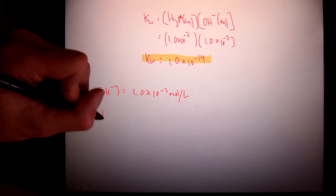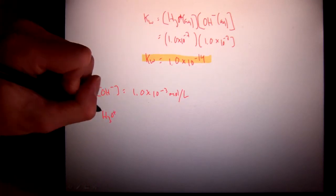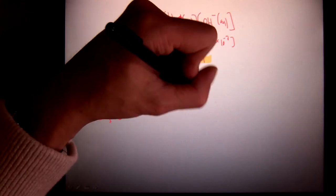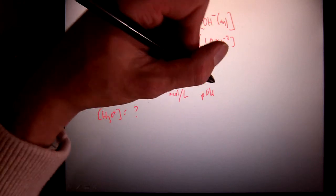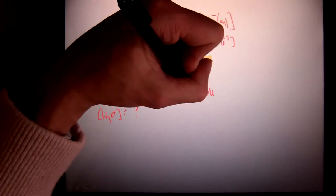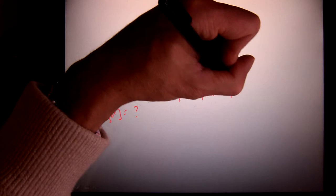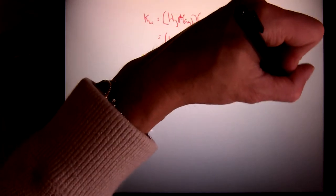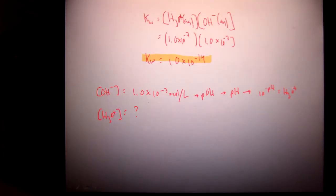The question is, what's the hydronium concentration? Well, in Chem 20, you would have first turned this into pOH. Then you would have turned that into pH by subtracting from 14. Then you would have used 10 to the negative pH in order to solve for hydronium. That's a lot of steps.